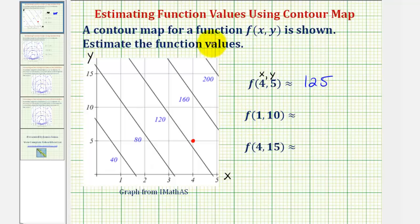Next, we have f of one comma ten, and the point one ten would be here. Again, notice how this point is very close to the contour line where the function value is 80. We also have a contour line here that's 40, so we might estimate a function value of let's say 76 or maybe 75. Let's just say 76.